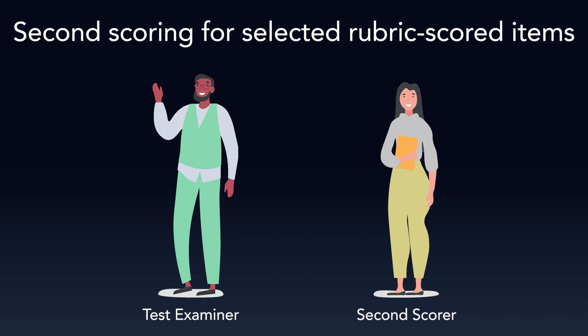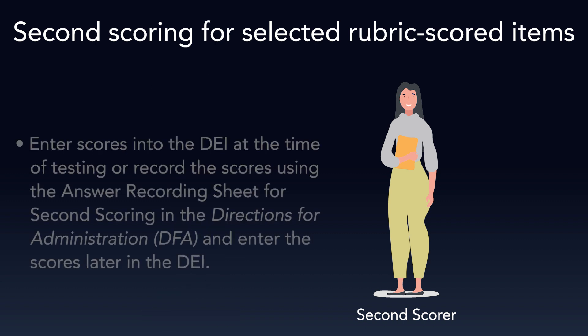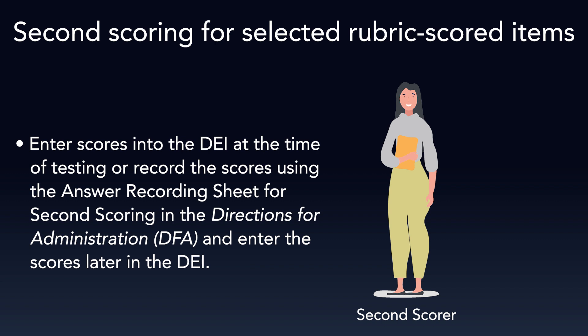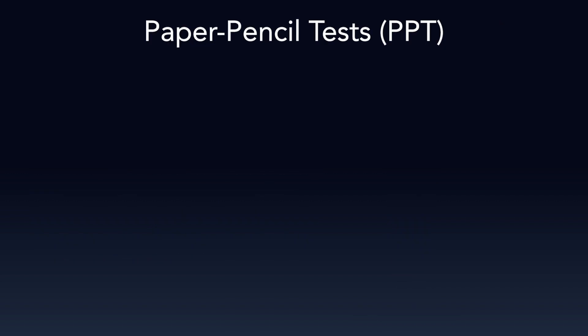Second scorers have two options to record scores. They can either enter the student's second scores directly into the DEI at the time of testing, or they can use the answer recording sheet for second scoring provided in the Directions for Administration, or DFA, to initially record second scores during testing and then enter them later into the DEI. The third and final use case for the DEI is to enter responses and scores for paper-pencil tests, or PPT.